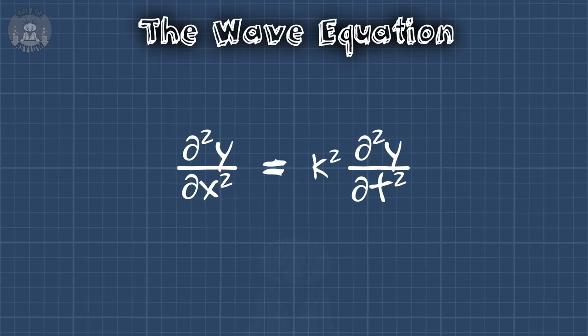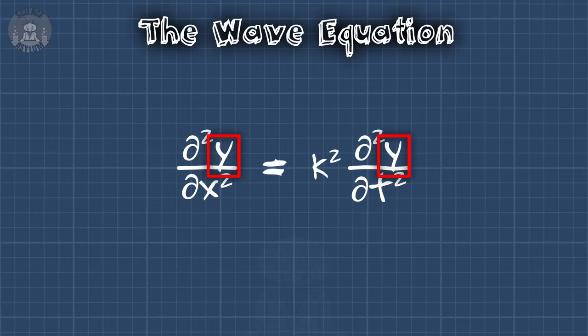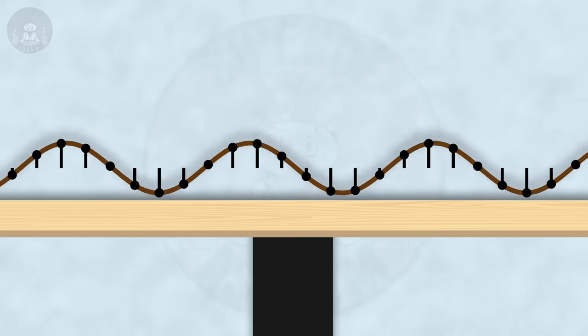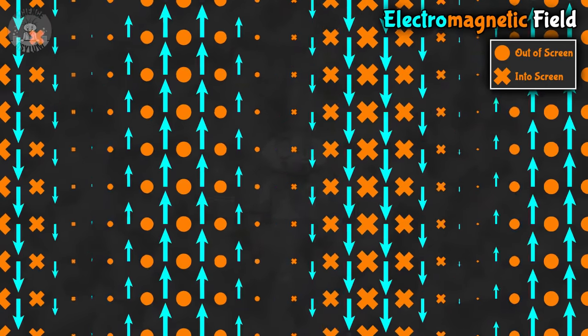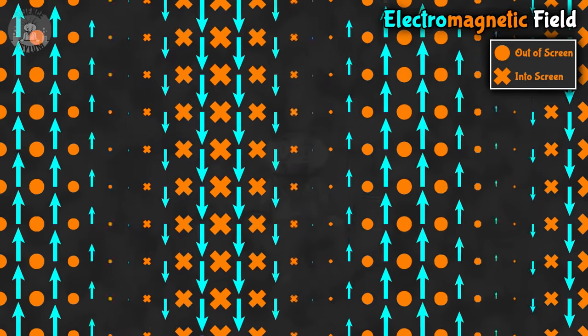That's exactly what the wave equation says. This relationship shows up all over physics, from strings to sound to light — you just have to change this quantity here. That's the deviation from equilibrium. For strings, it was a physical distance. The same is true for sound. For light, it's a deviation in the value of the electromagnetic field, not a distance. But what about quantum mechanics?